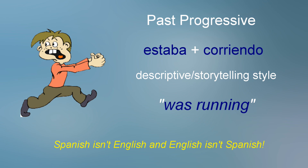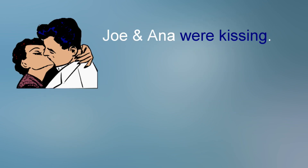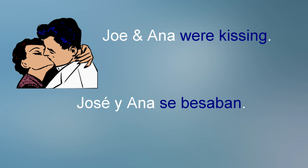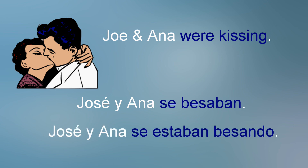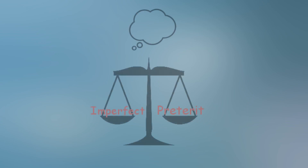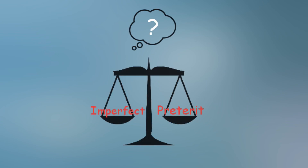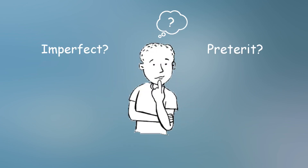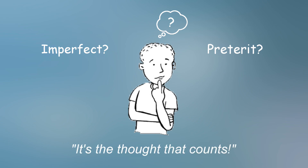Therefore, a phrase like 'Joe and Anna were kissing' can be expressed two ways: José y Anna se besaban, or José y Anna se estaban besando. The difference between the imperfect and the preterite can be challenging to students because its mastery depends more on the thought processes behind the verbs than the translation of the verbs from English to Spanish and vice versa. Therefore, students should always remember the maxim: it's the thought that counts.